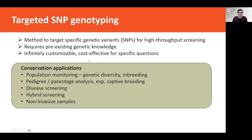As a conservation application, targeted SNP genotyping is very useful in population monitoring — repeatedly surveying species to document changes in genetic diversity and inbreeding over time. SNP panels are useful for pedigree and parentage analysis in captive breeding programs, disease screening, and screening for hybrids. One great advantage of this approach is that of all genetic methods, it is the most useful for non-invasive samples, which is obviously very valuable for wildlife applications.